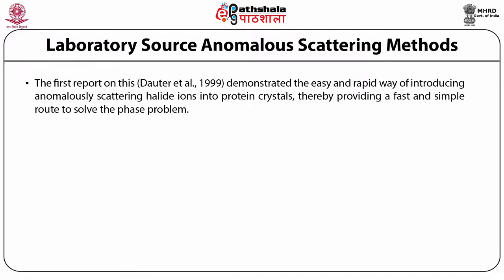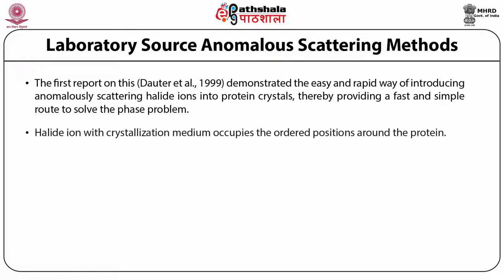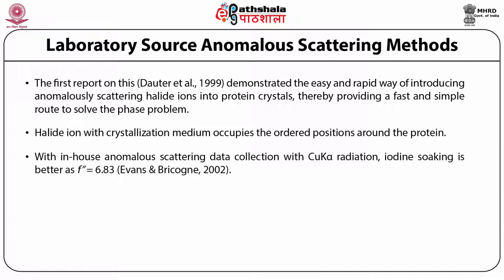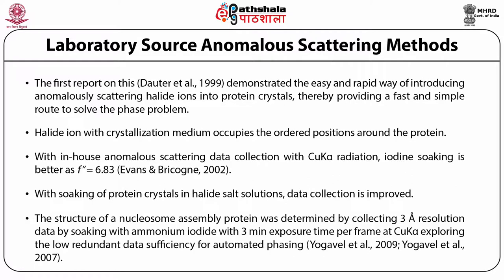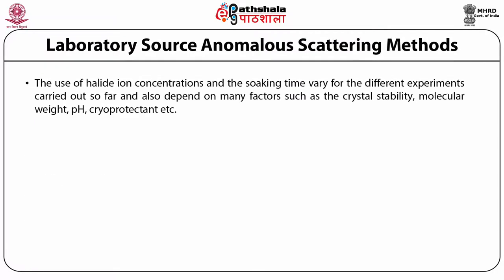Dauter's team has done extensive work on halide soaking and published research papers. The first report by Dauter's team demonstrated the easy and rapid way of introducing anomalous scattering halide ions into protein crystals, providing a fast and simple route to solve the phase problem. Here there is an important contribution by my Indian friend Dr. Rajesh Shankar. Halide ions in the crystallization medium occupy outward positions around the protein. With in-house anomalous scattering data collection using copper K-alpha radiation, iodine soaking is better because the imaginary part correction F double prime equals 6.83 electrons at this wavelength. The structure of a nucleosome assembly protein was determined by collecting 3-Å resolution data by soaking with ammonium iodide with 3-minute exposure time per frame at copper K-alpha radiation, exploring the sufficiency of low redundant data for automated phasing.